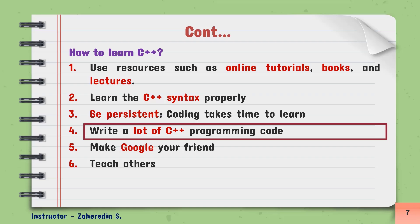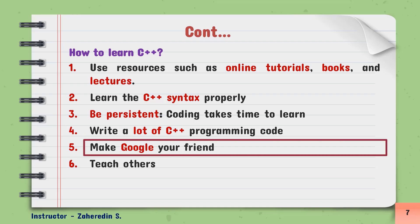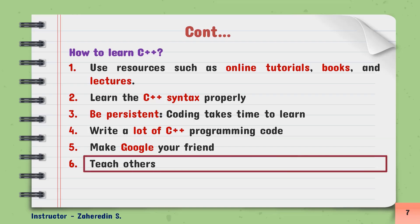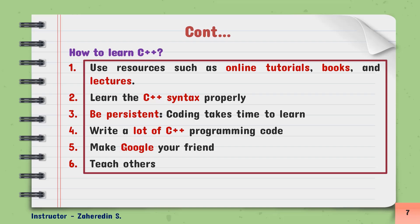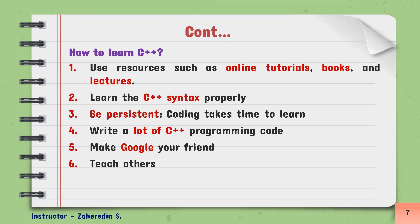The fourth tip is to write a lot of C++ programming code. Please try to write C++ programs by yourself, otherwise it will be difficult to learn C++ programming language. The fifth tip is to make Google your friend. You may have many questions, and I may not always be able to answer you, but Google is always available for you. Whatever problem you face, go to Google. Trust me, Google has all the solutions for you. The last tip is to teach others. After learning C++ programming language, please teach others. These are six basic tips that help you to learn C++ programming language.